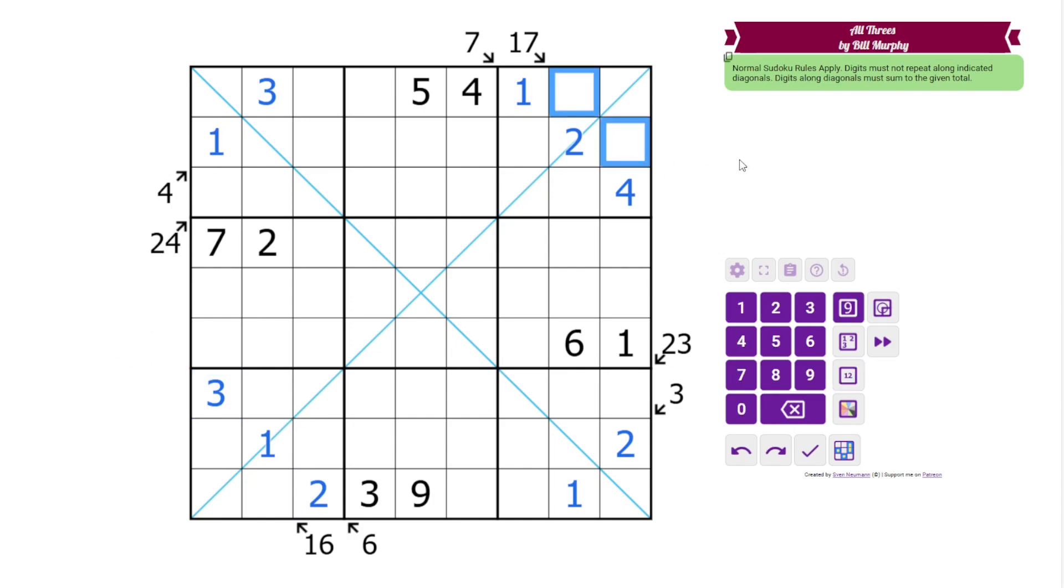And the high sums, 17 in 2 cells can only be 8, 9. 23 in 3 cells can only be 6, 8, 9. And that's not 6, and that's not 9. 16 must be 7, 9. And there's a 7 there, so that's 9, 7.